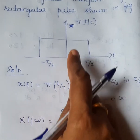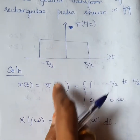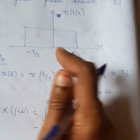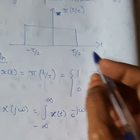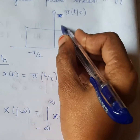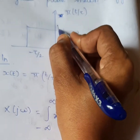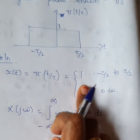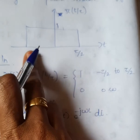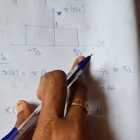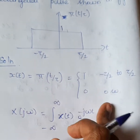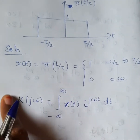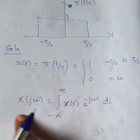Here x(t) is given as Π(t/τ). The value of x(t) has amplitude 1 from -τ/2 to +τ/2, and 0 otherwise. Now we want to apply the Fourier transform formula.